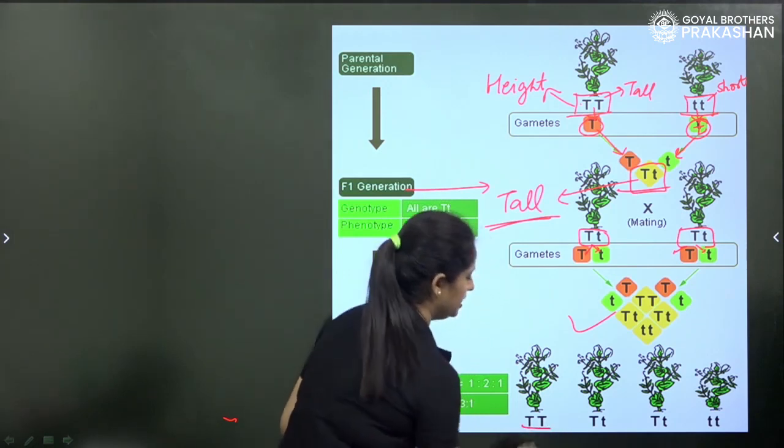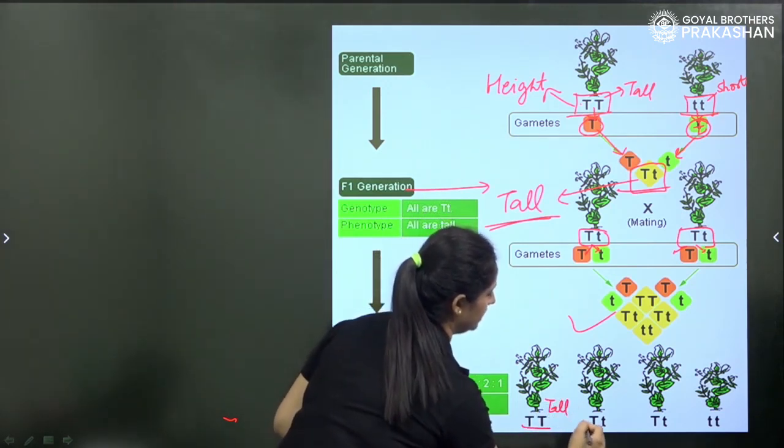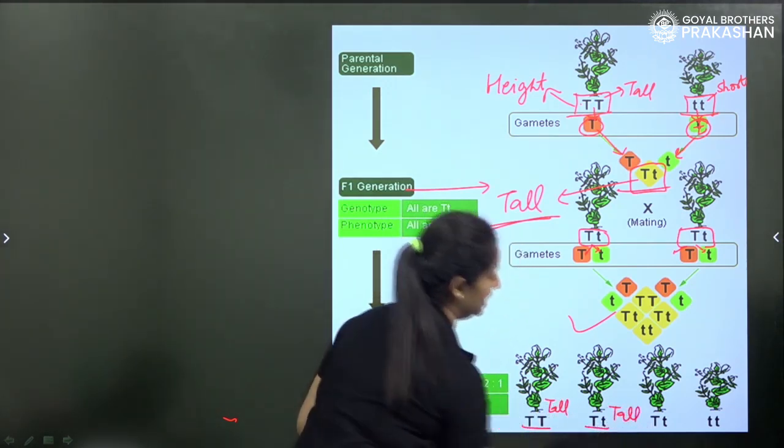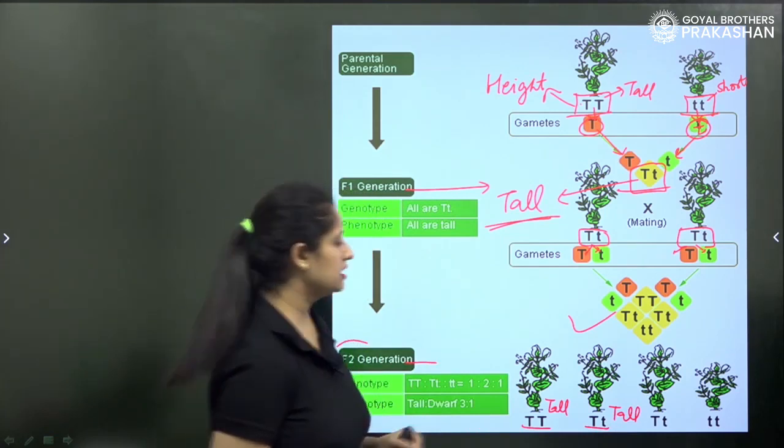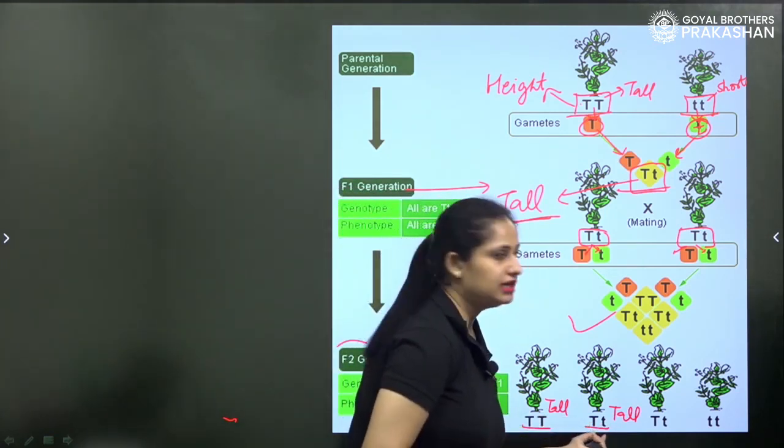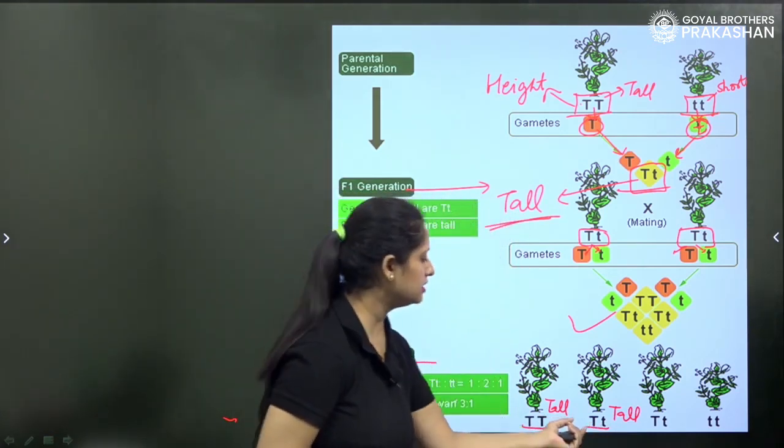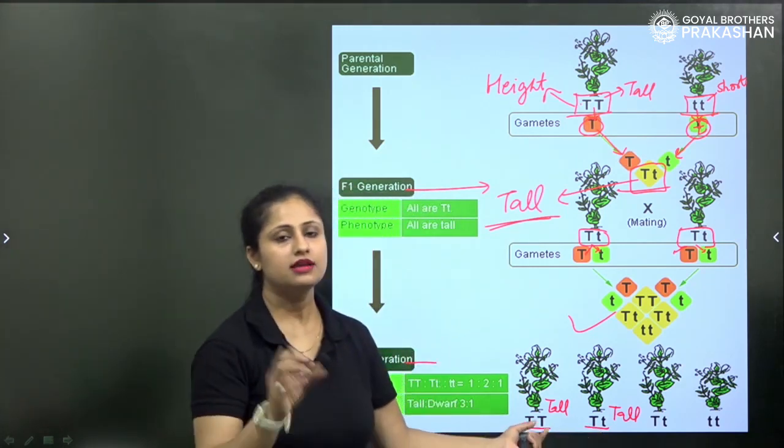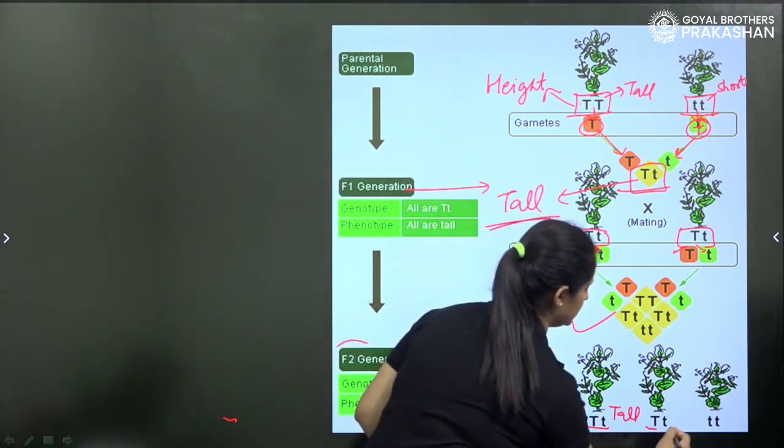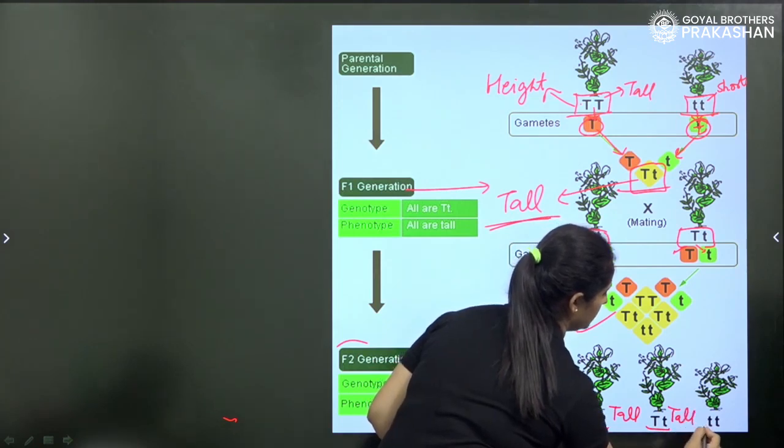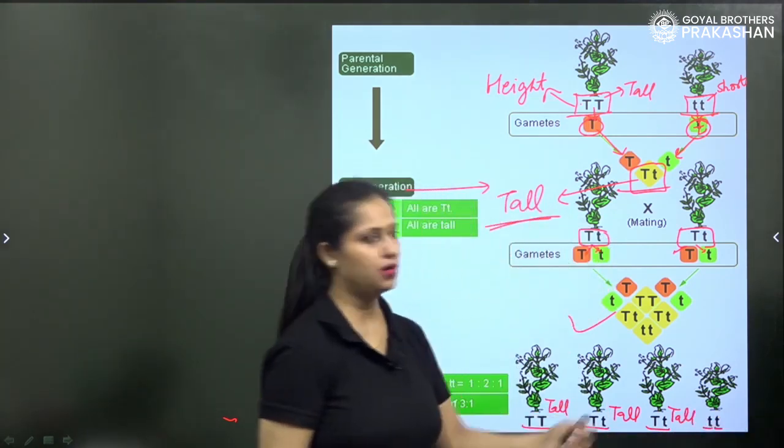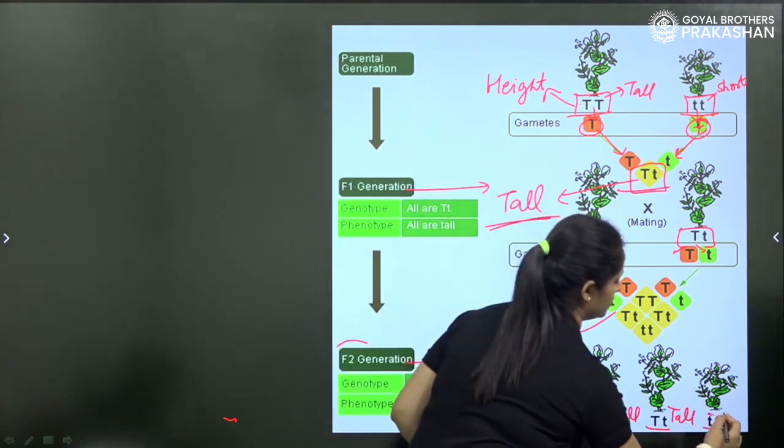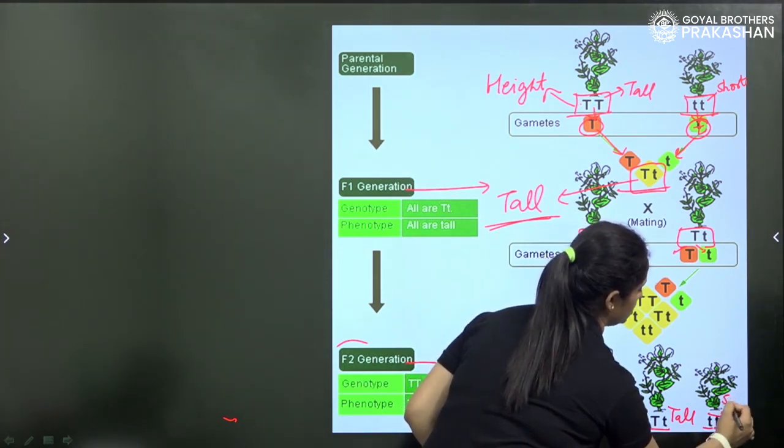TT, it means this is the tall variety. This is again the tall variety because the capital letter is considered as a dominant character. Tt, this is also tall. But t small, t small, it means the variety or the progeny is dwarf or short.